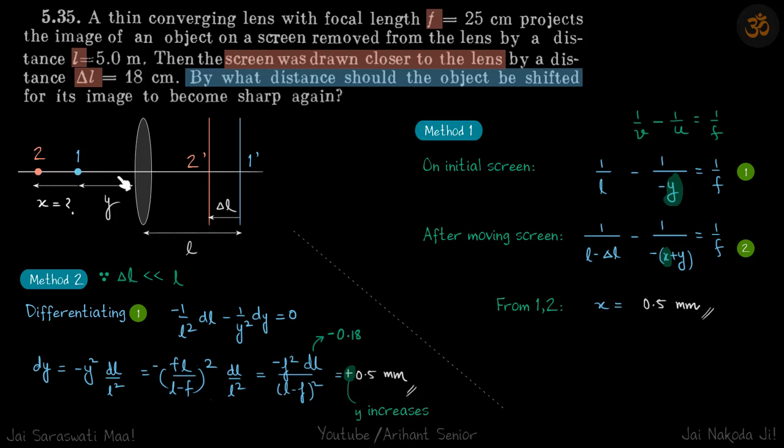See, in this case, the image is being formed on the screen, which means the image is real. And if the image is real, then for a convex lens, if the object comes near the lens, then the image moves away from the lens. So if the image is moved towards the lens, then the object must also have been moved away from the lens.